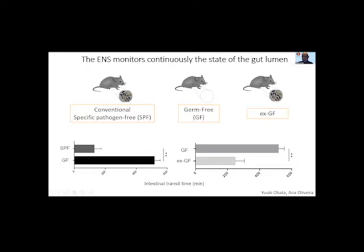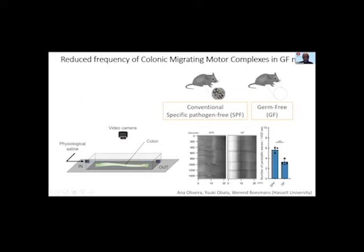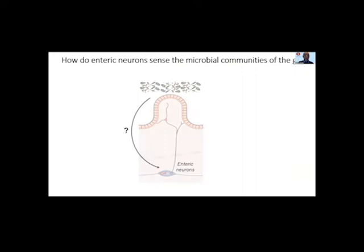Importantly, if you introduce microbiota into germ-free mice, now called ex-germ-free mice, that restores to a large extent the length of the intestinal transit time. But of course transit time doesn't depend only on the nervous system, so we use another assay based on video recording of a live colon preparation, which allows us to generate spatiotemporal maps of a particular motility program of the colon — the colonic migrating motor complexes. You can see in this experiment that germ-free mice not only have a lengthening of the intestinal transit time, but also have a reduced frequency of colonic migrating motor complexes, with quantification shown here.